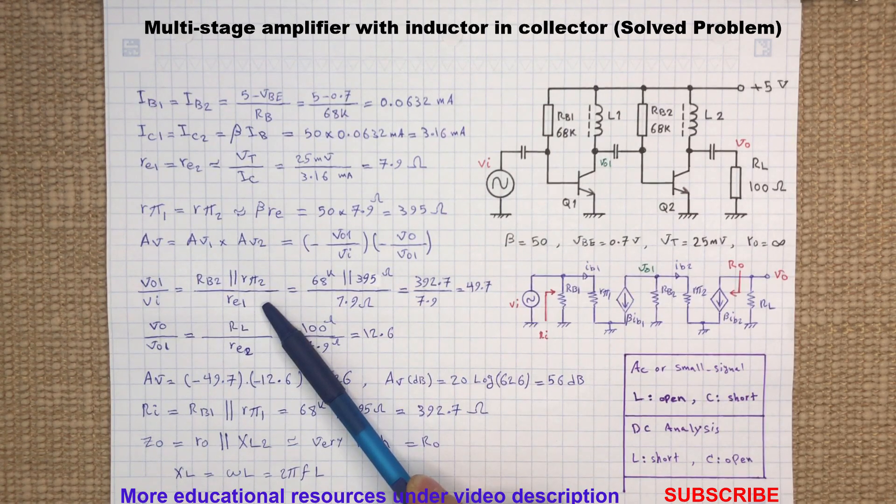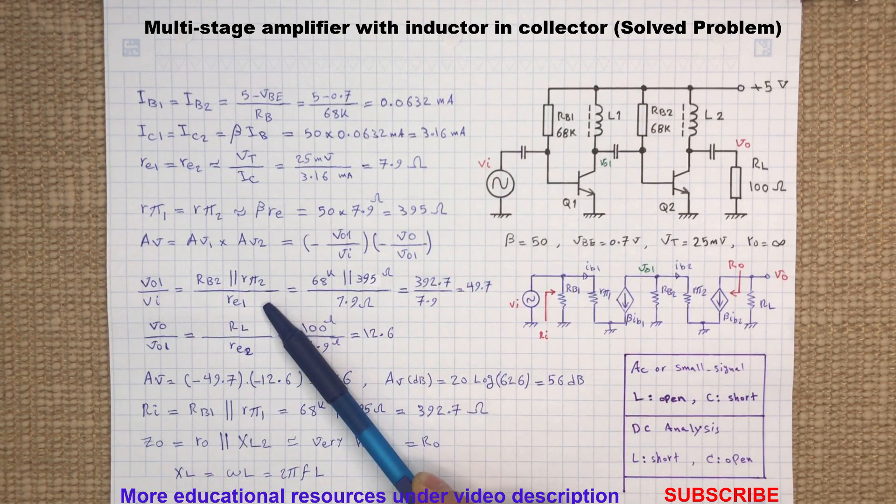So it means for the first stage, the voltage gain VO1 to VI will be the biasing resistor RB2 in parallel with the resistance seen from the base of Q2, which is RA-pi2, and dividing it by the RAE1, which is the emitter dynamic resistance of Q1.